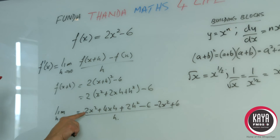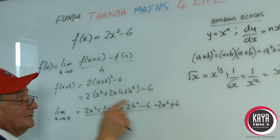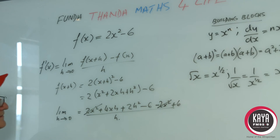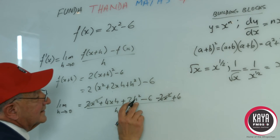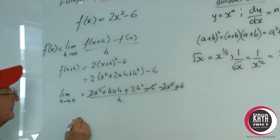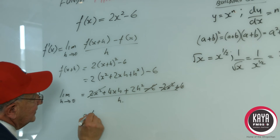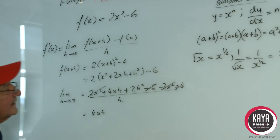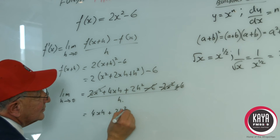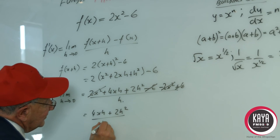As you can see there's 2x² and -2x² so we can eliminate those two, and there's -6 and +6 and those two will also be eliminated. So now we are left with 4xh + 2h² divided by h.